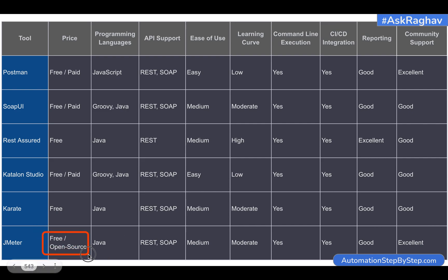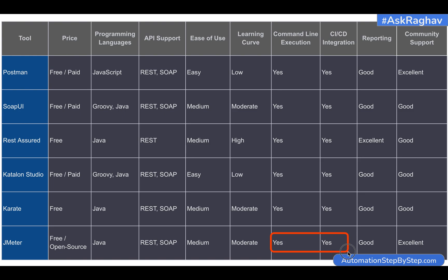Then talking about JMeter — JMeter is free and open source with no paid version. It supports Java primarily, with some other language options available. It has options to test both SOAP and REST APIs. It does have a GUI, although it is not customized specifically for API testing, so ease of use is medium and the learning curve is moderate. It has all the options for command line execution and CI/CD integration. Reporting options are also good — you can integrate different listeners in JMeter for reporting. It has excellent community support being an open source tool with a huge community.